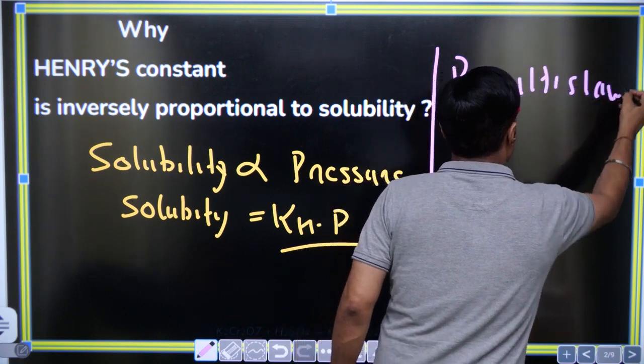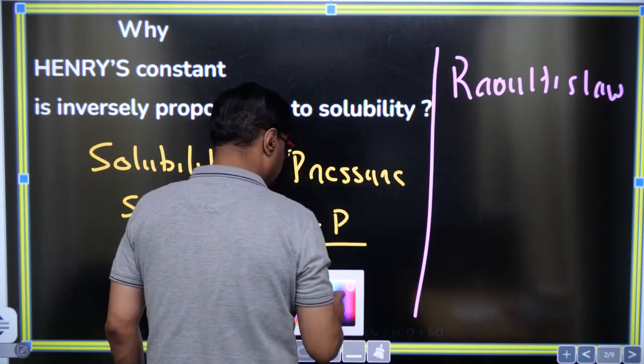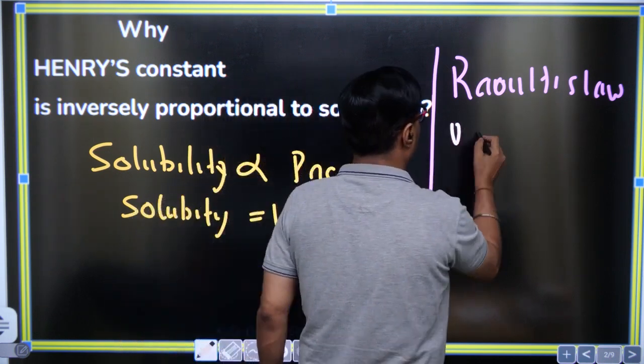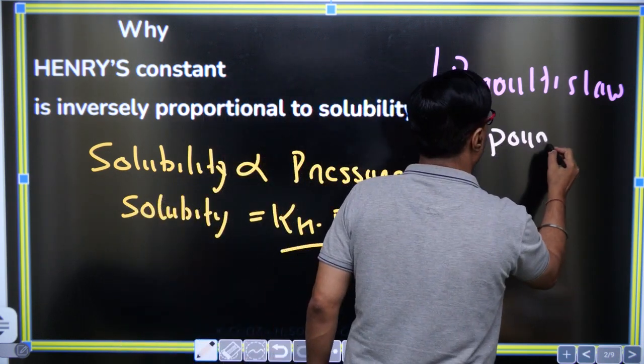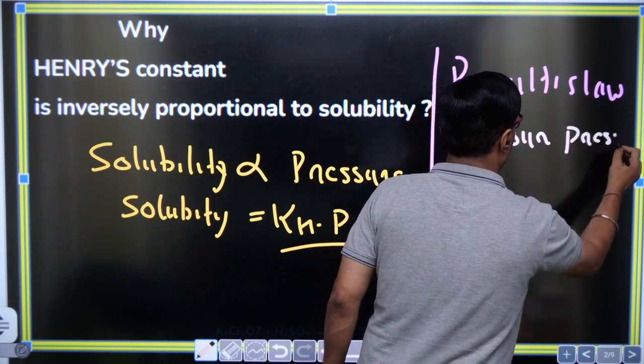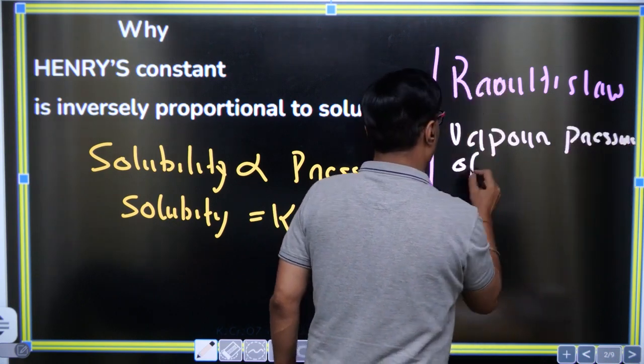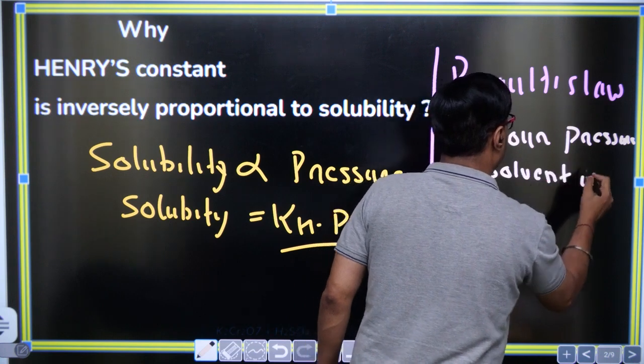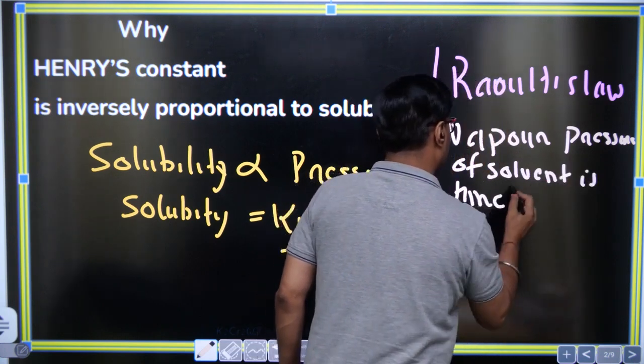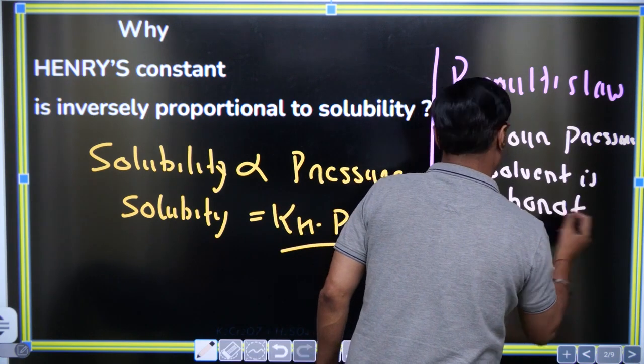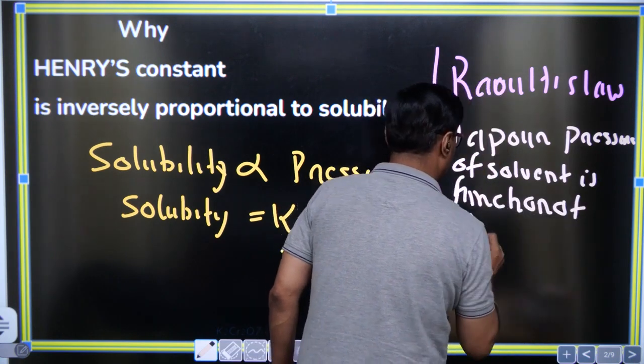The number one is Raoult's law. What is Raoult's law? It's vapor pressure - the vapor pressure of solvent. It's the function of a mole fraction.